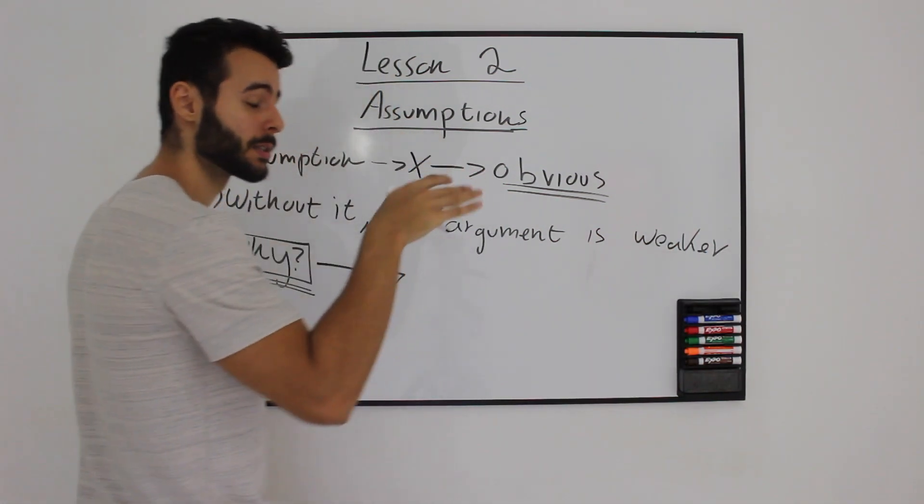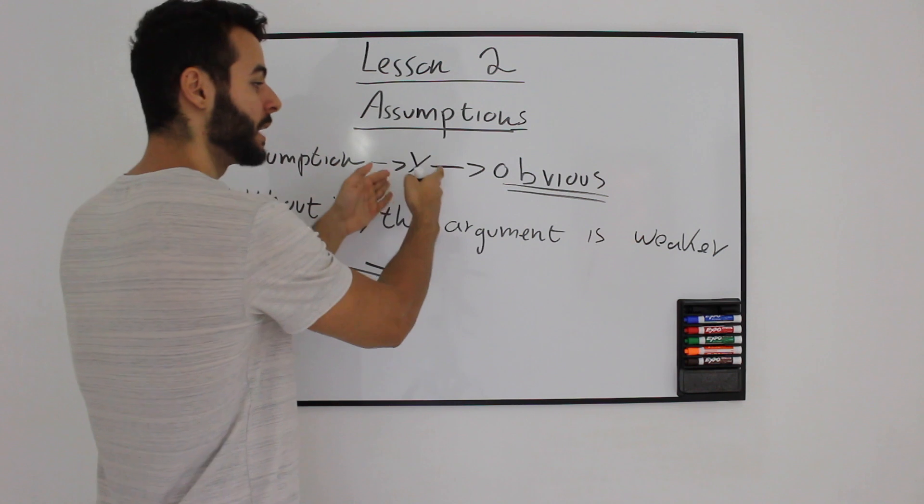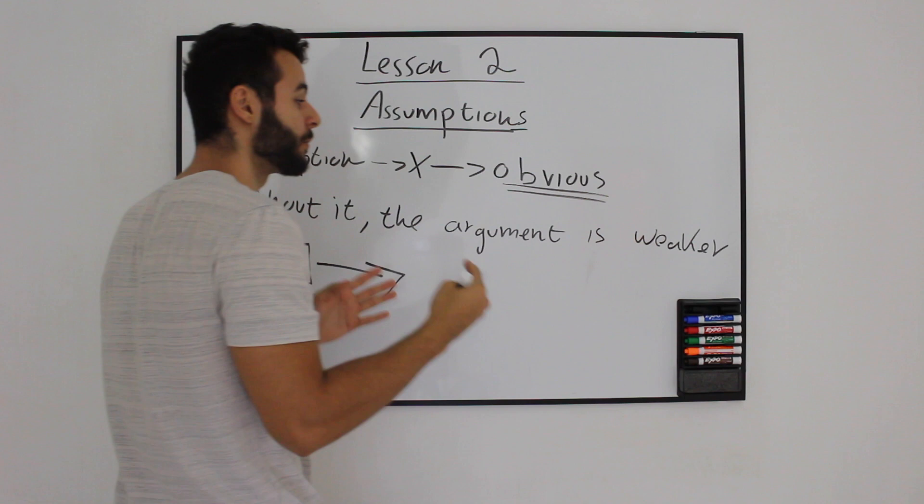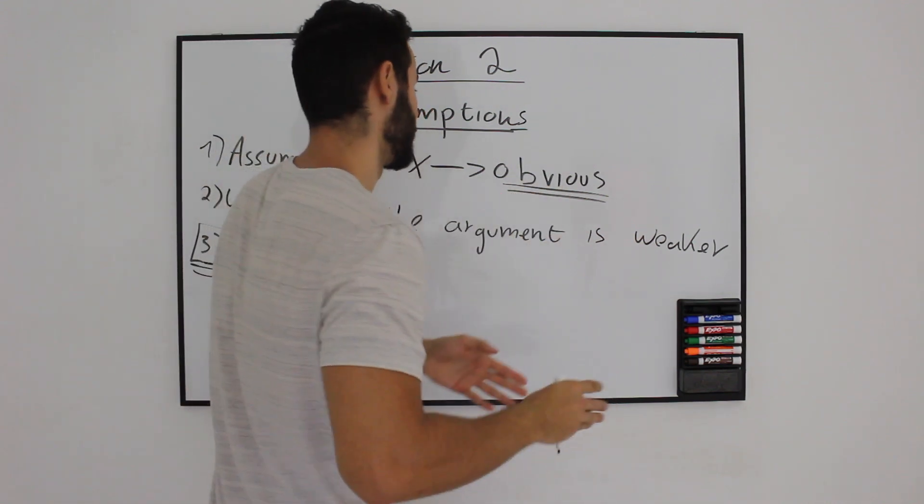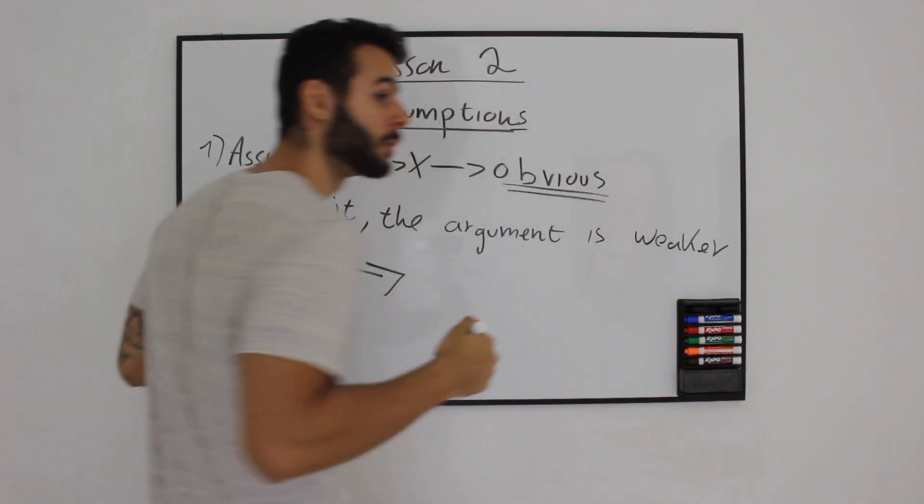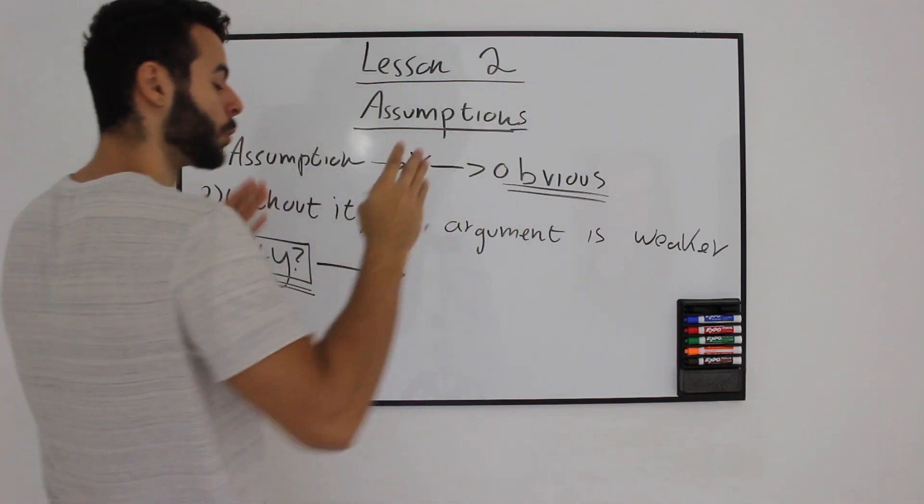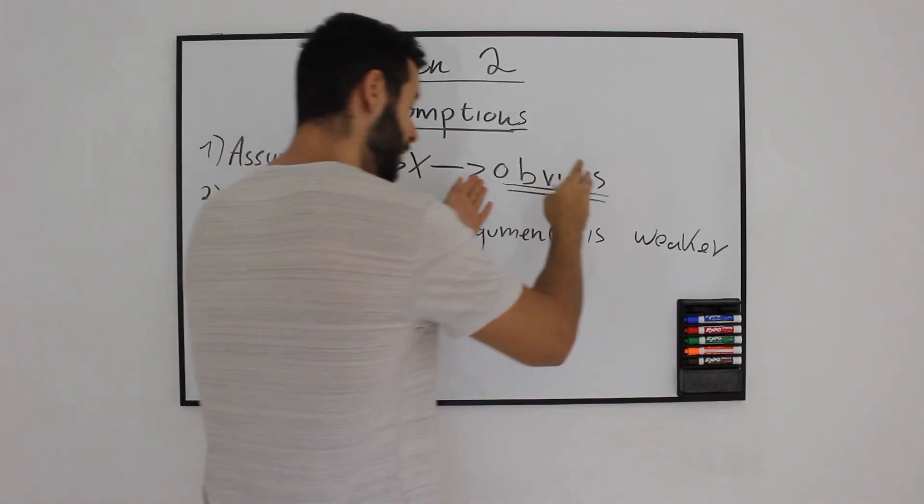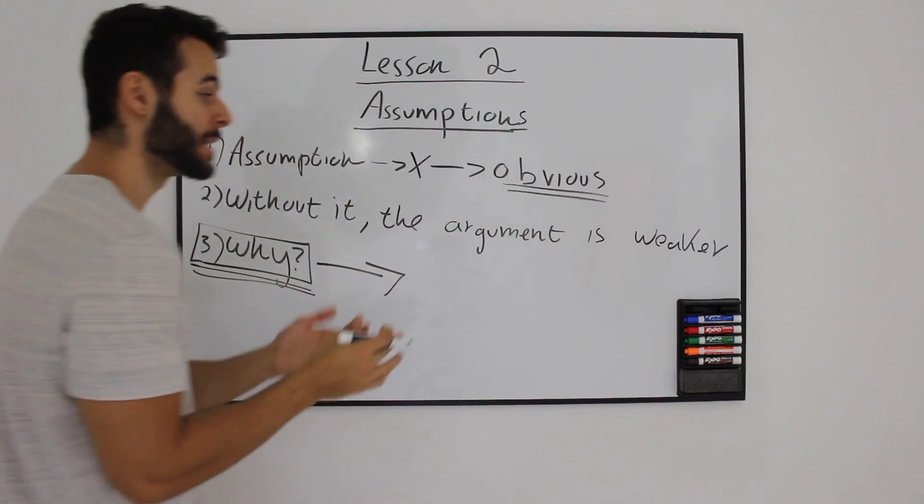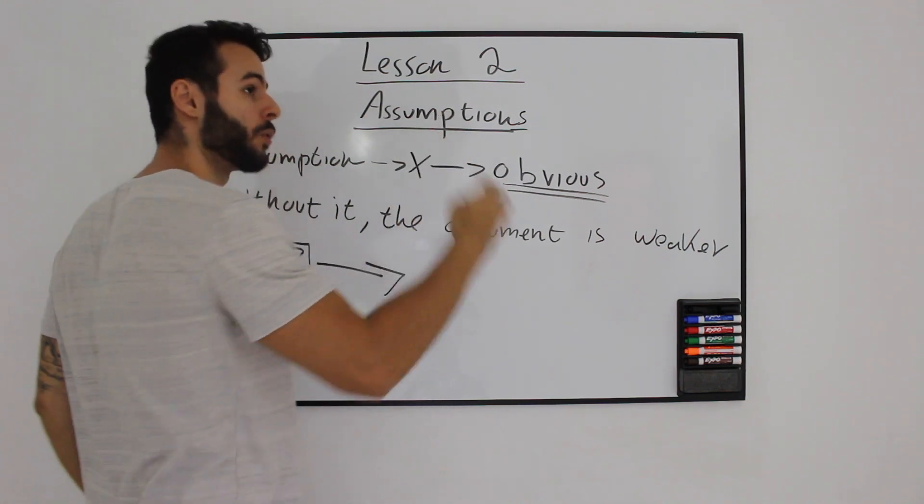So, for these specific assumption questions, we are going to have an assumption that won't be appearing inside the statement, and it's going to be obvious, so obvious to the writer of the paragraph that it doesn't even appear inside the paragraph itself. But without it, the argument is much weaker. What do I mean? The writer is based on the fact that his assumption is true, and if it isn't true, his entire paragraph is baseless.